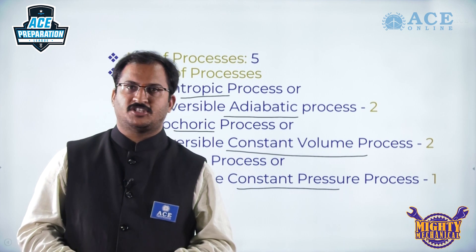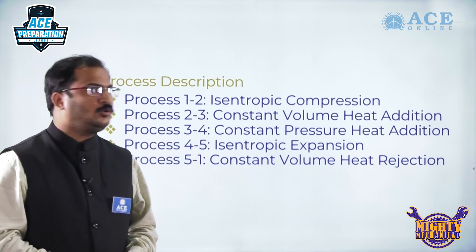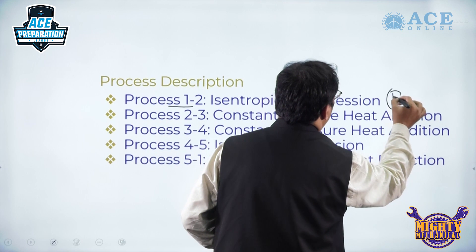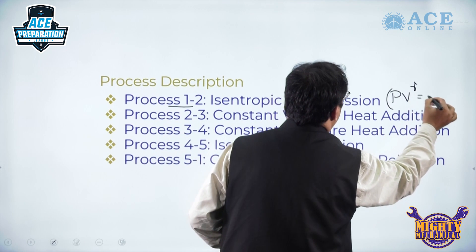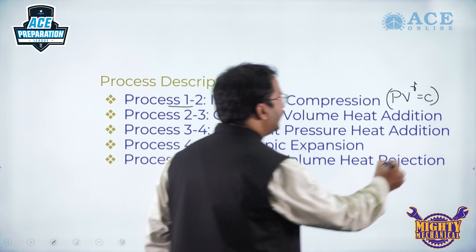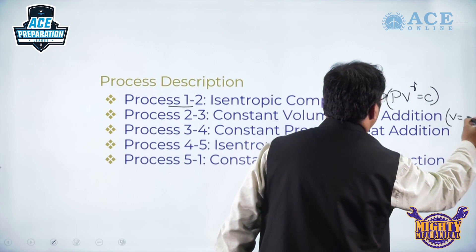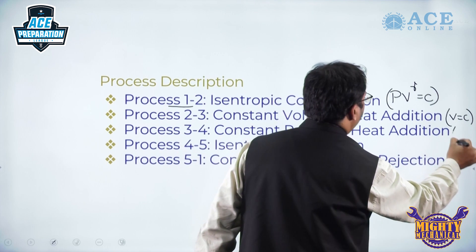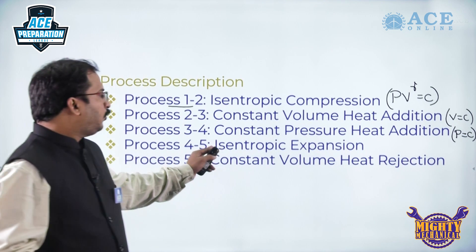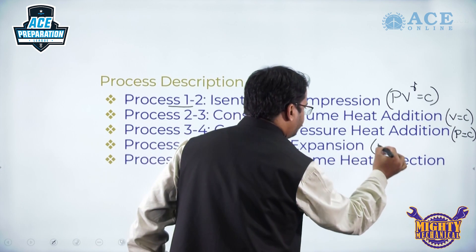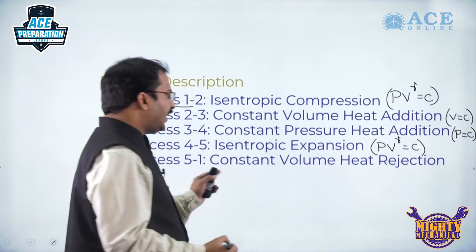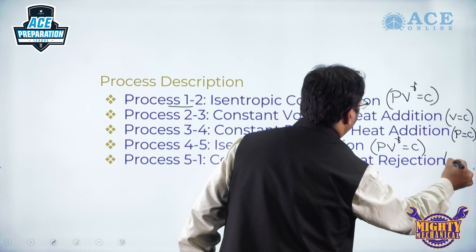Let us see the process description. Process 1 to 2 is isentropic compression, so it obeys PV^γ = constant. Process 2 to 3 is constant volume heat addition, and process 3 to 4 is constant pressure heat addition. Process 4 to 5 is isentropic expansion, and process 5 to 1 is constant volume heat rejection.